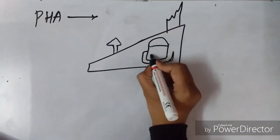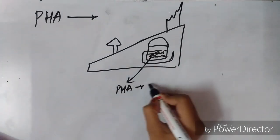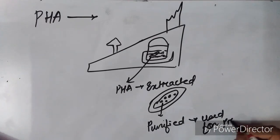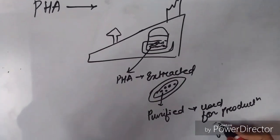In industrial production, PHA is extracted and purified from the bacteria by optimizing the conditions after the fermentation of sugars and lipids.